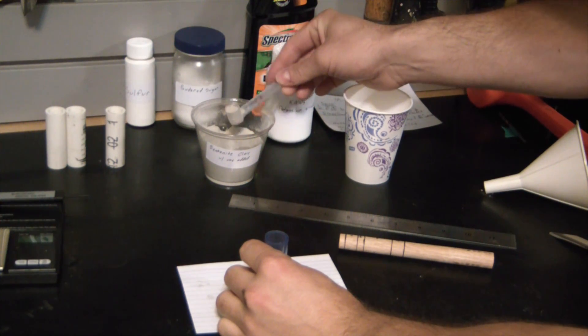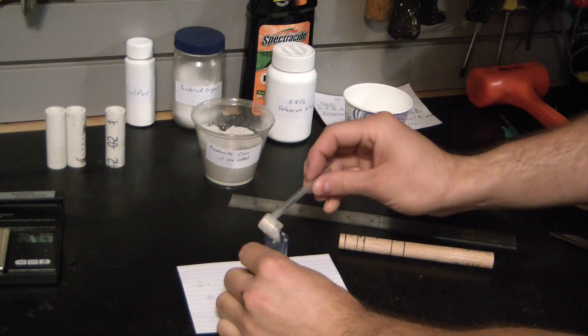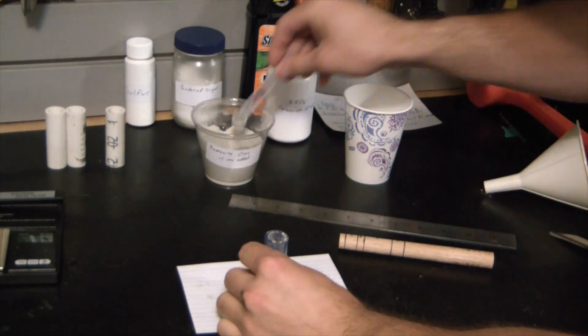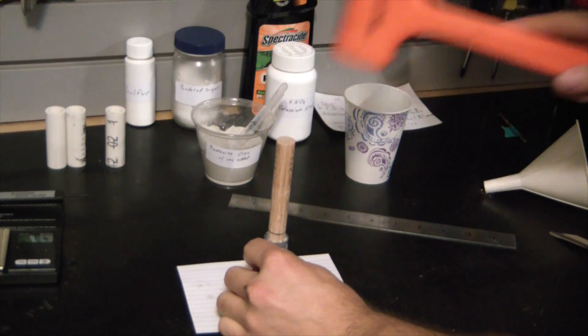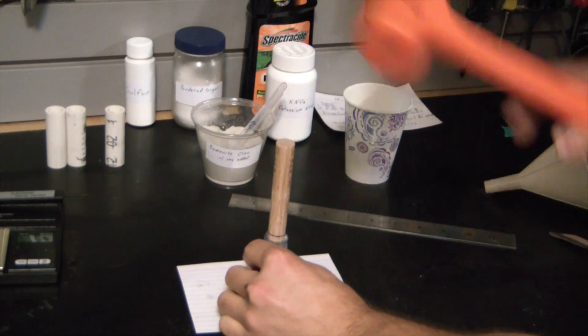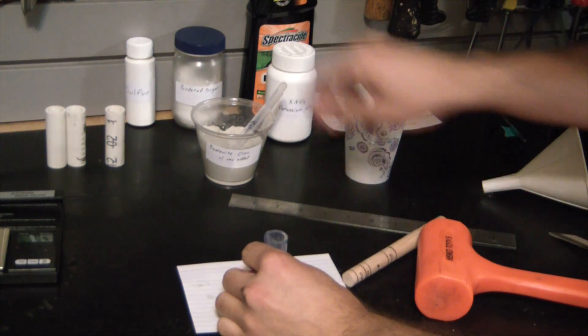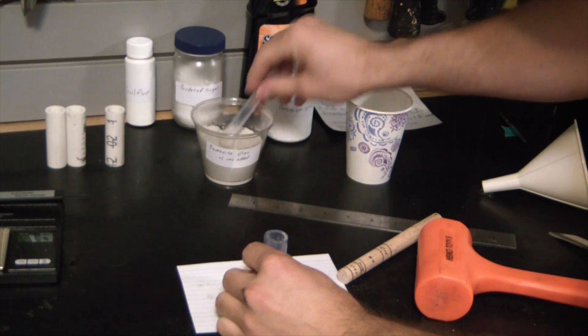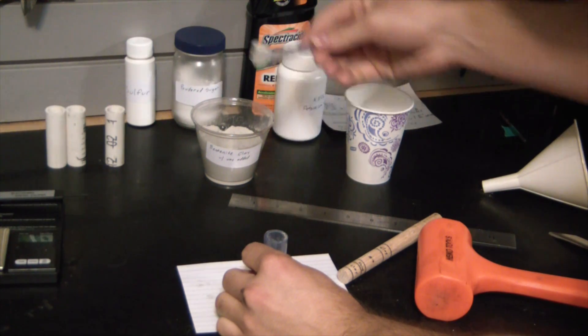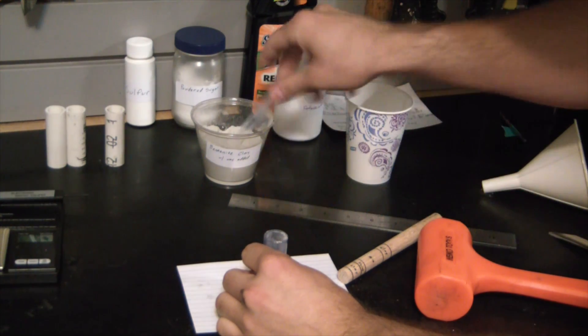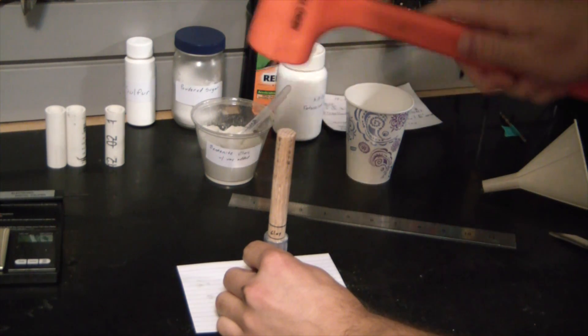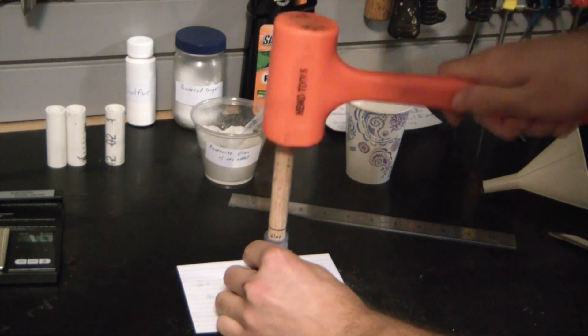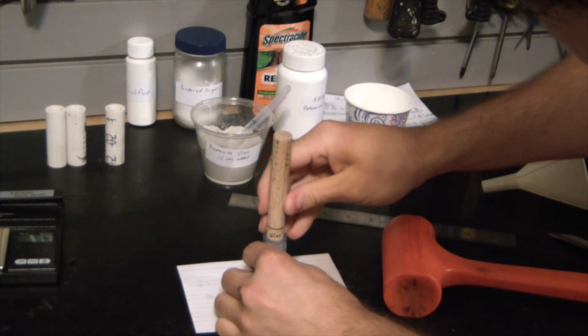To get half inch of clay, it's going to be roughly one teaspoon of bentonite clay total. Each one of these is a half, this should bring us right up to the half inch mark. Might need a little bit more.